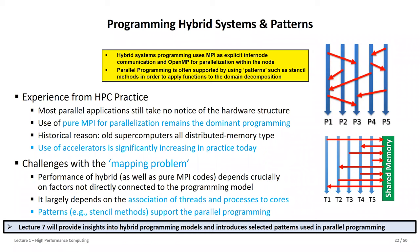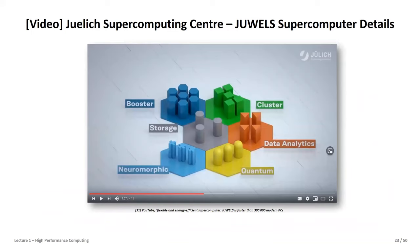Hybrid programming combines the power of shared memory inside a node and distributed memory across nodes, always with a very good communication interconnect — which is usually the most cost-intensive part of an HPC machine. Programming hybrid is not easy — we will have a dedicated lecture on what it means to program these large systems today. Combining shared and distributed memory can give the best performance for an application, but requires good understanding of the problem and how to map it to the technology. We'll also cover adding accelerators in Part 2.